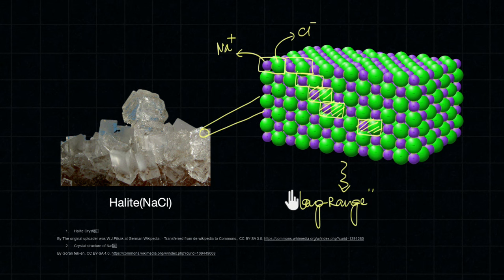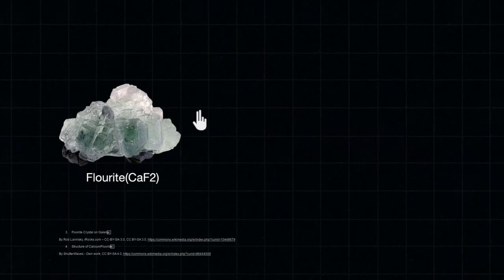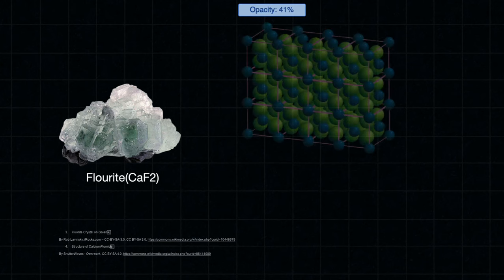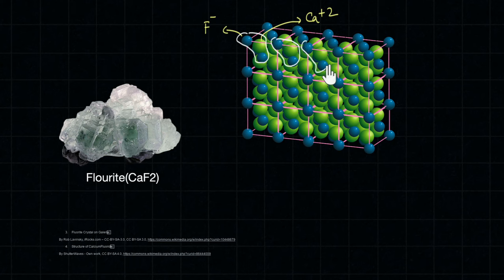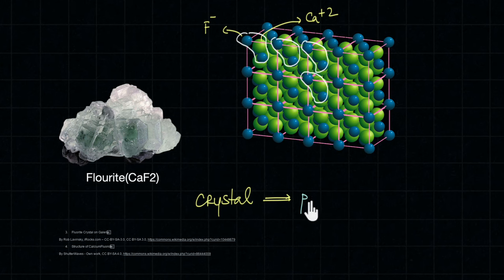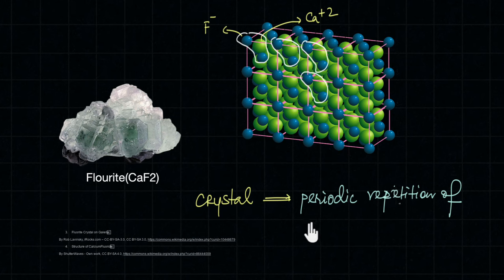Whatever way you try to look into this crystal, you'll find the exact same pattern. So we say this crystal has long range order because the pattern is the same everywhere. Similarly, if we take a crystal of calcium fluoride and look into it, we see it is again made up of calcium and fluoride ions repeating throughout the crystal in a very regular, ordered way.